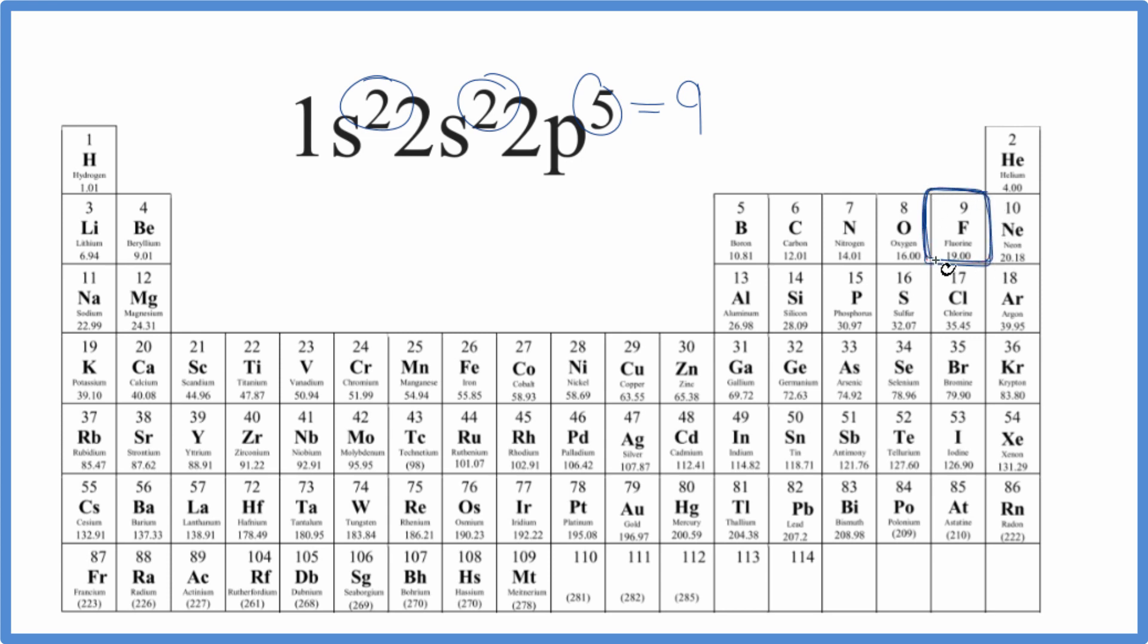So this fluorine right here has the electron configuration of 1s²2s²2p⁵.